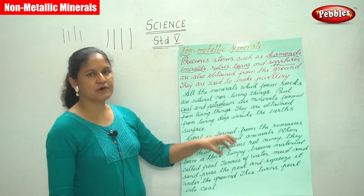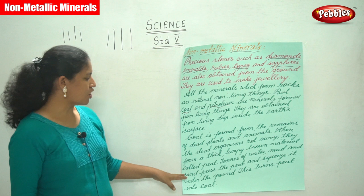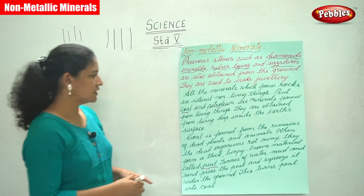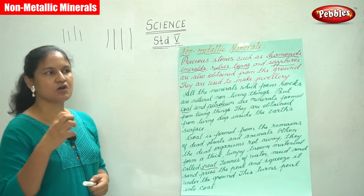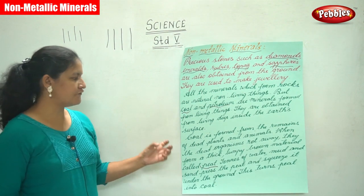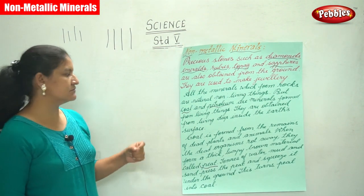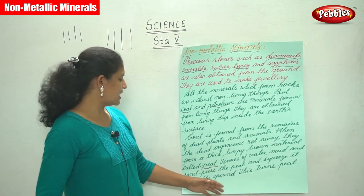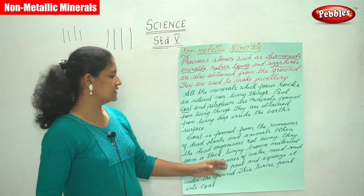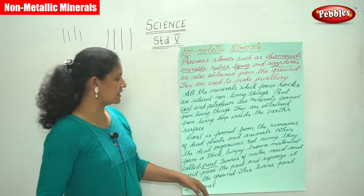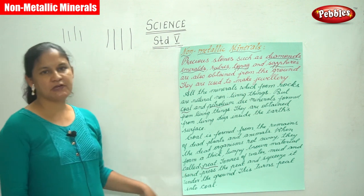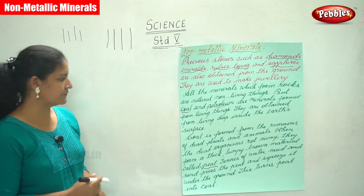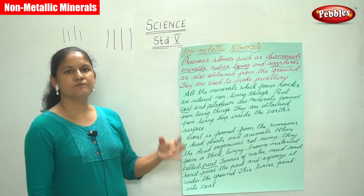When the dead organisms rot away, they form a thick lumpy brown material called peat. Tons of water, mud, and sand then press the peat and squeeze it under the ground. This process turns peat into coal.